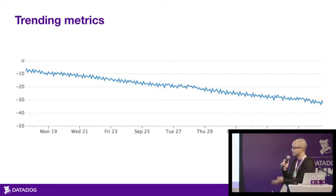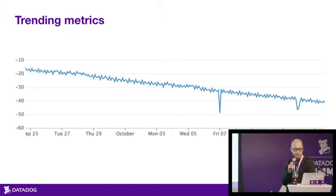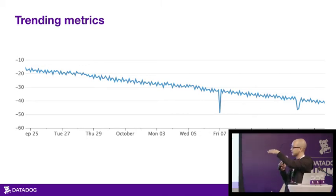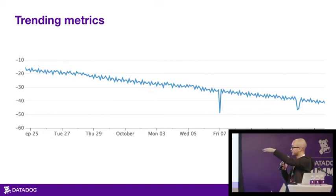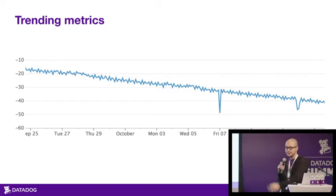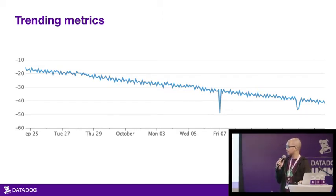But there are plenty of cases where threshold alerts aren't sufficient. Say you have a trending metric — one that always goes down. You're going to have to constantly reset a threshold alert if you want to catch downward spikes, because the metric keeps trending downward. So you'll either reset it all the time or just get lots of false alarms.